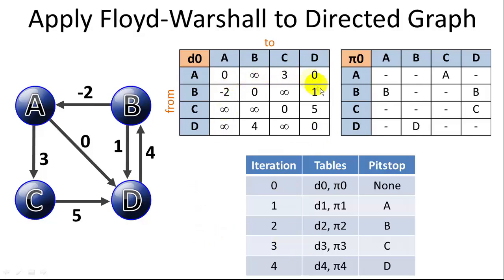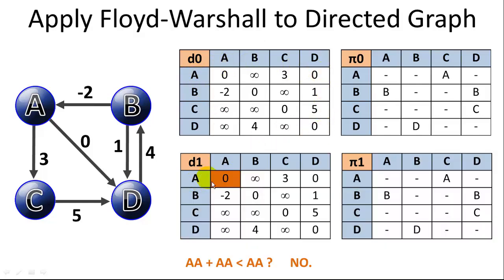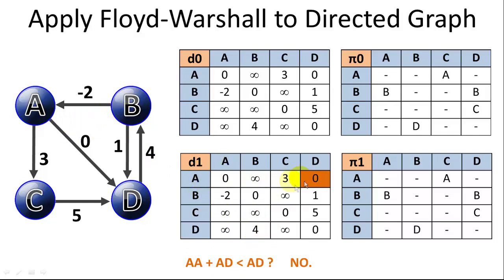In the first iteration, we check every cell to see if stopping at vertex A gives a shorter path. For the A-row cells, stopping at A and then going to the destination is essentially adding zero to the distance, so none of those improve. Similarly, B to A stopping at A doesn't help since the destination is A. And B to B is already zero, which can't improve.